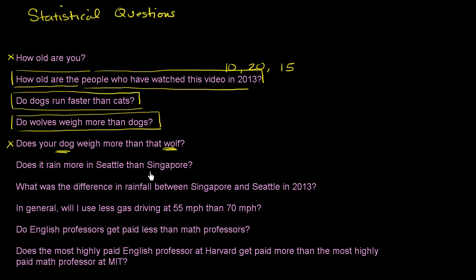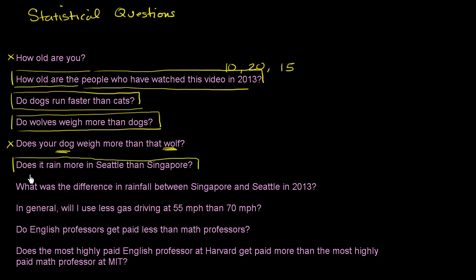Does it rain more in Seattle than Singapore? There's variation here — in some years it might rain more in Seattle, in other years more in Singapore. Even just for Seattle, it rains a different amount from year to year. That's where statistics is valuable. We can look at the data set for Seattle and come up with an average or central tendency, and compare that to the average for Singapore. This is definitely a statistical question.